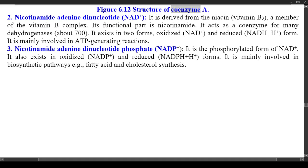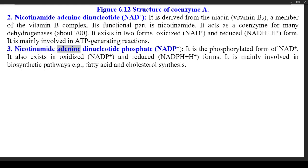Figure 6.12 shows the structure of Coenzyme A. (2) Nicotinamide Adenine Dinucleotide (NAD⁺) — it is derived from niacin (vitamin B3). Its functional part is nicotinamide. It acts as a coenzyme for many dehydrogenases (about 700). It exists in two forms: oxidized (NAD⁺) and reduced (NADH + H⁺). It is mainly involved in ATP-generating reactions. (3) Nicotinamide Adenine Dinucleotide Phosphate (NADP⁺) — it is the phosphorylated form of NAD⁺. It also exists in oxidized (NADP⁺) and reduced (NADPH + H⁺) forms. It is mainly involved in biosynthetic pathways, e.g., fatty acid and cholesterol synthesis.